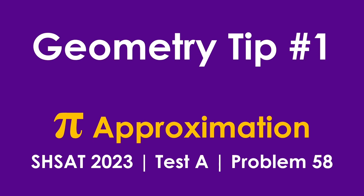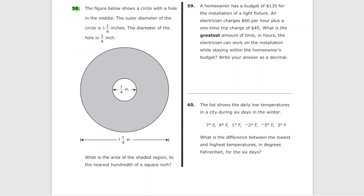The first geometry tip is Pi approximation. We are going to do problem number 58 from test A of SHSAT 2023. The figure shows a circle with a hole in the middle. The outer diameter is one and one quarter of an inch. The diameter of the hole is one quarter of an inch. We need to find the area of the big circle minus the area of the small circle, approximated to the nearest hundredth.